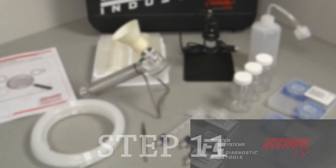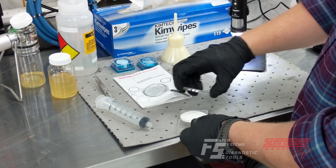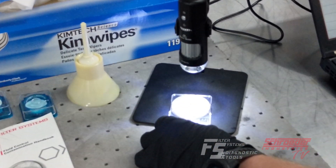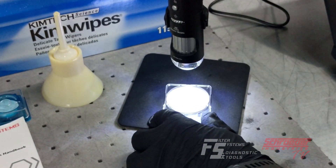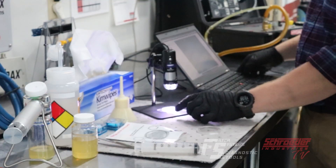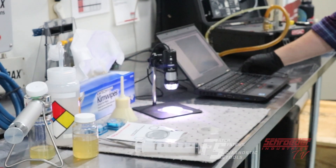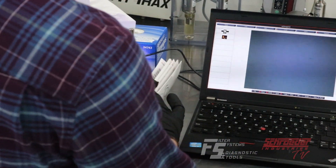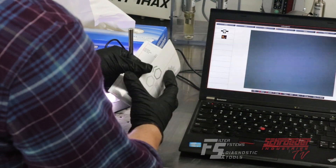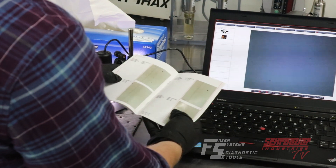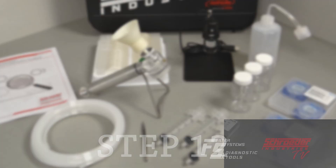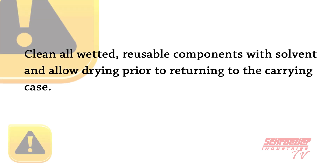Step 11: Examine the contaminated fluid patch with the digital microscope and analysis software. Refer to the fluid control contamination handbook to determine the nearest representative contamination distribution image. This will be the estimated cleanliness of the sample. Step 12: Clean all wetted, reusable components with solvent and allow drying prior to returning to the carrying case.